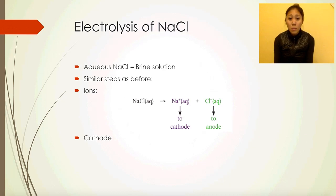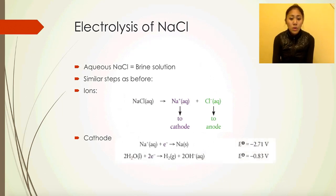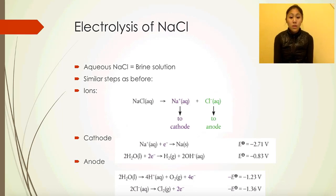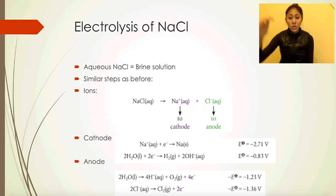We can write out our cathode and anode reactions. Remember, in electrolysis we also have to take into account cathode and anode with respect to water because they are aqueous solutions. We have comparisons of sodium and water reductions, and we have water and chloride ion oxidation. Which ones do you think will occur at the cathode and which at the anode? Remember, the standard electrode potentials in your data booklet table 24 go from negative to positive, where negative on top is where oxidation usually occurs, and as we go down the reactivity series, reduction increases. Cathode is reduction; anode is oxidation.